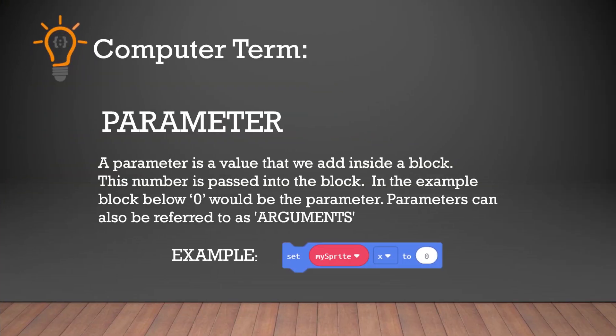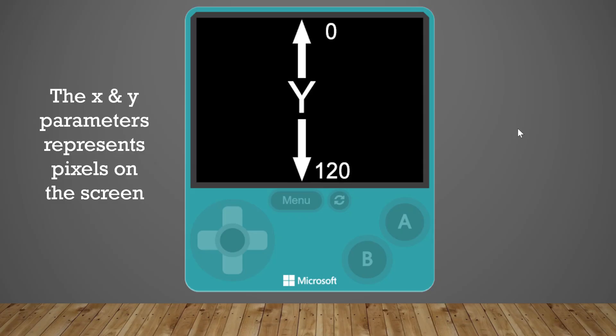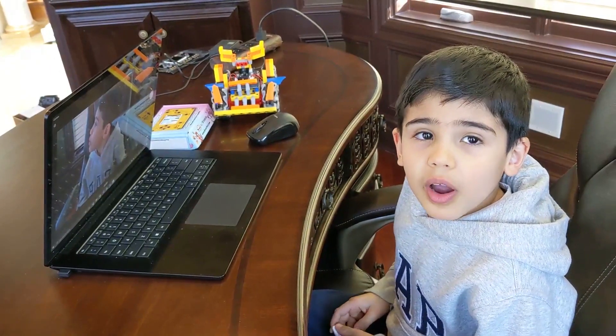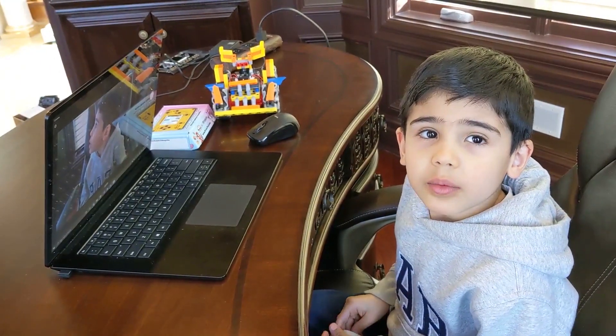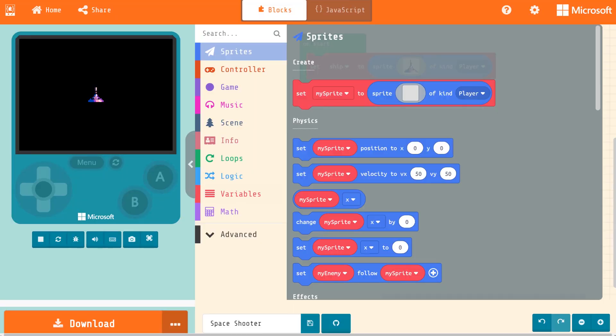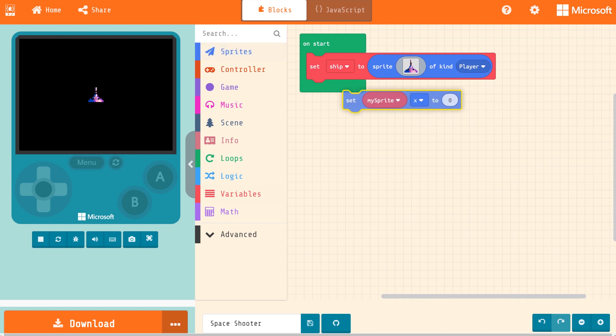I know I'm teaching you a lot of things today, but there's one more thing I need you to know. It's a parameter. A parameter is a number you give to something in a block in your program. The X and Y parameters represent the pixels on the screen. The X and Y tell the sprite where it needs to be. Let's put this ship at the bottom of our screen.